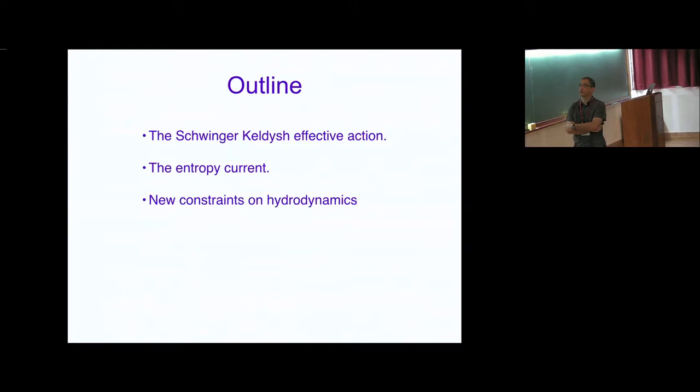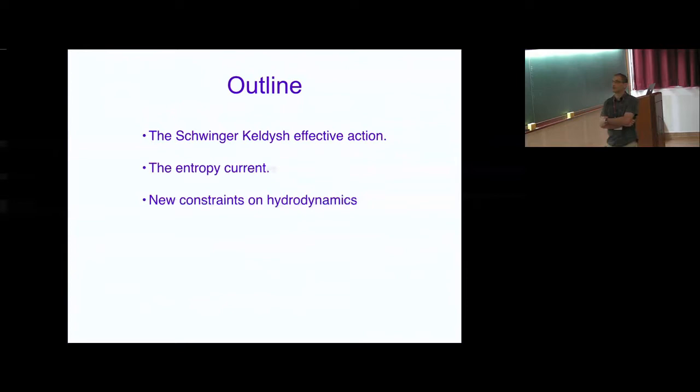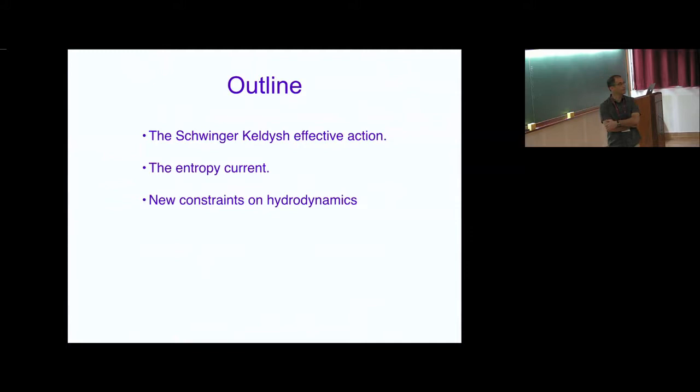Most of the talk I'm going to describe the Schwinger-Keldish effective action. It's necessary in order to explain what we actually computed, and I'm going to show how to get the entropy current from it. I'll have only a little bit of time to outline how new constraints are obtained. Our version of the effective action for the Schwinger-Keldish generating function is a hybrid version of what the MIT group and Felix, Mukund, and Loga did.